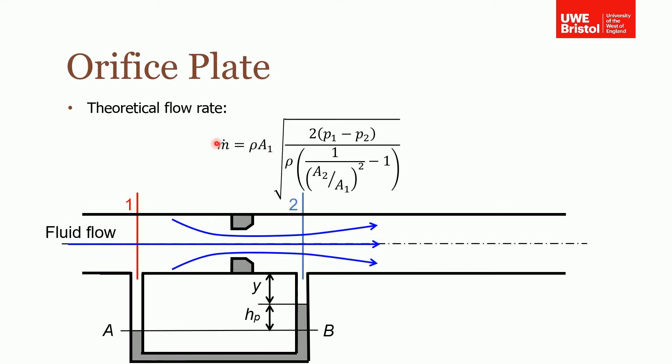Similarly we can show that the mass flow rate through these devices is equal to the density times area one times C1, which if you remember we derived this from a combination of Bernoulli's and continuity. So go back and look at the other section to see how this was derived.